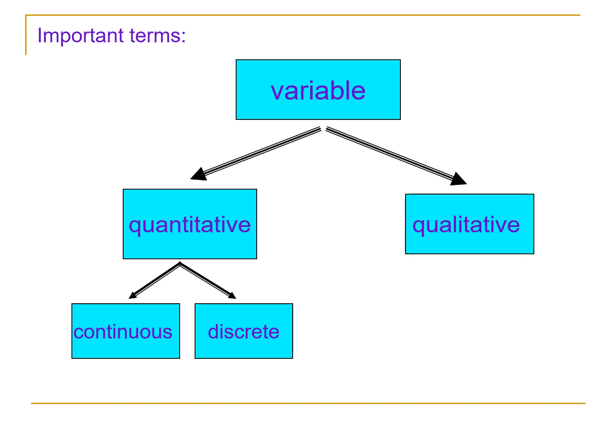While qualitative variables take on categorical variables like favorite color, degree program, or your gender. Those are examples of qualitative variables.